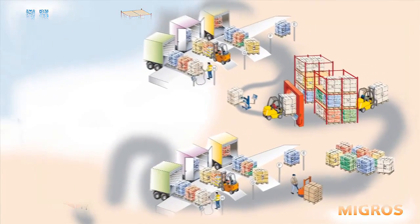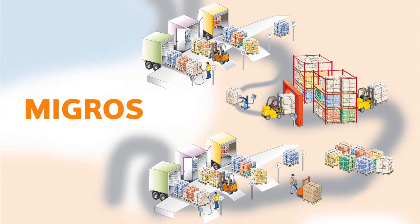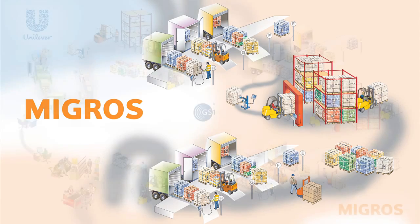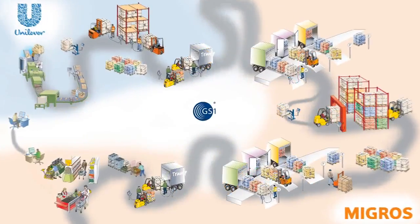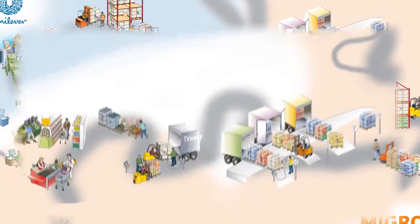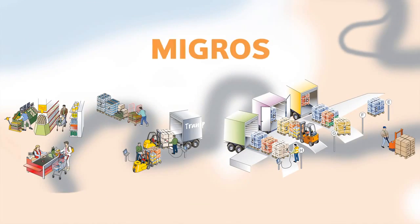Within the distribution center, goods are received, stored, picked into trade items, and then prepared for shipment to the retail store. The goods are loaded onto trucks and transported to the store.